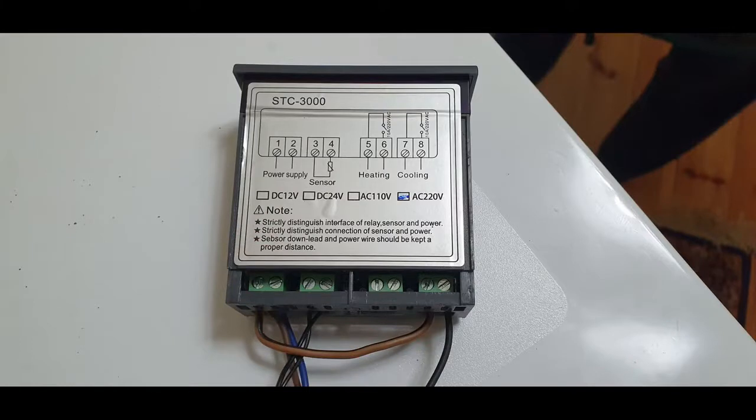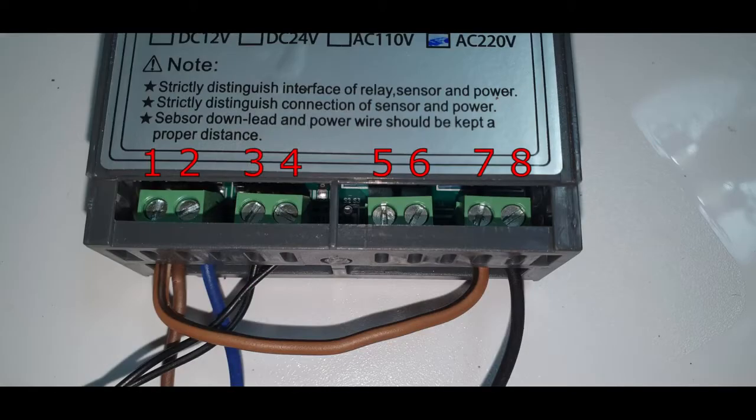We switch the connections between the old controller and the new one. The phase and neutral are connected as a power supply to the controller in ports 1 and 2. The temperature sensor is connected to ports 3 and 4.